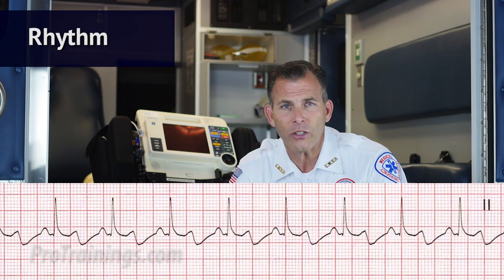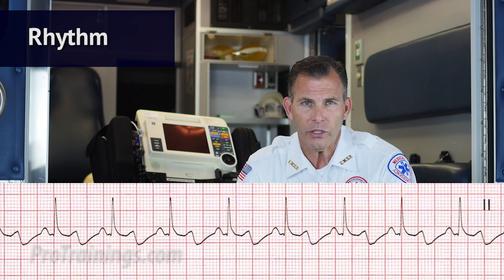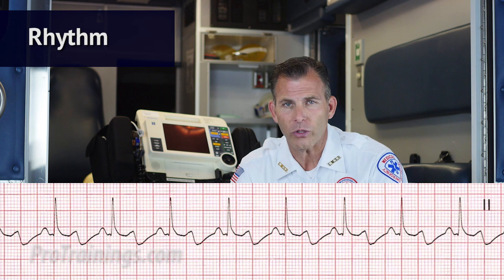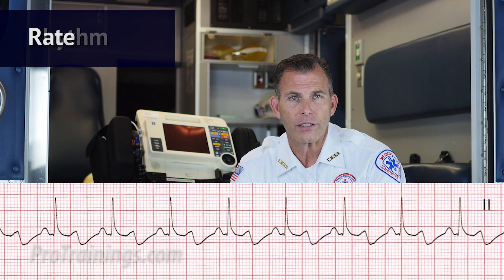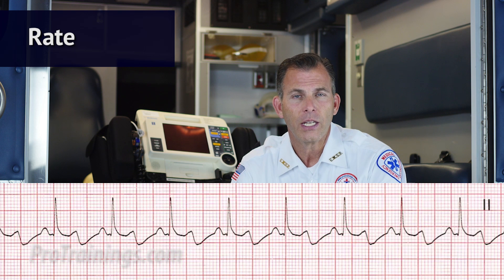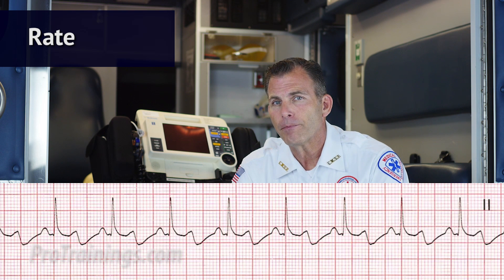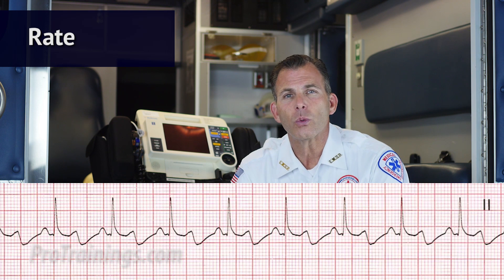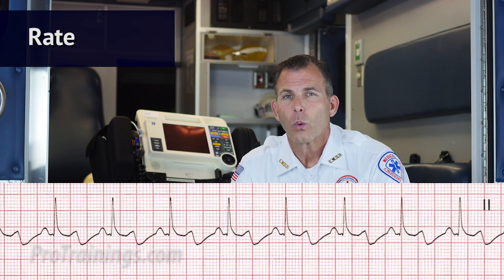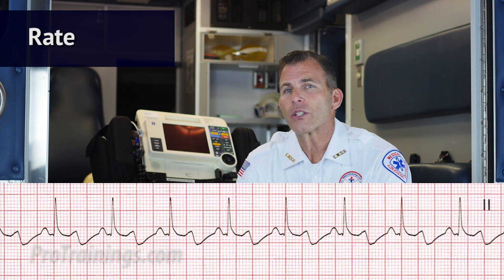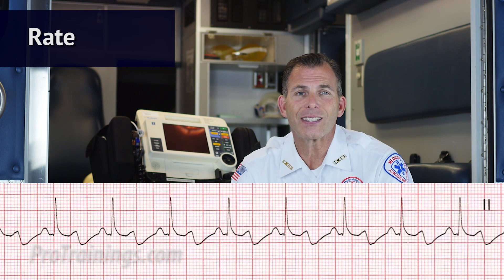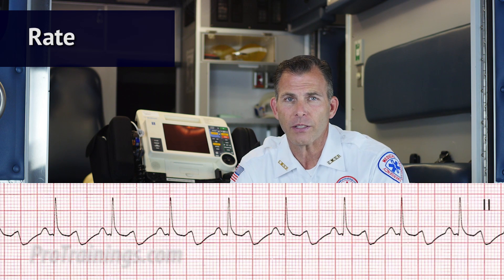So we're going to start with the rhythm. Is the rhythm regular or irregular? In this case it's regular. Next we look at the rate. What is the rate? It's 80 beats per minute. Is the rate normal, fast, or slow? We know that the rate is normal because the rate is between 60 and 100 beats per minute.